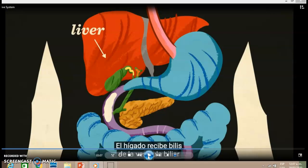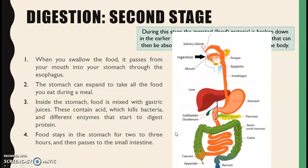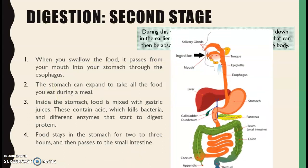Here we have the meaning of chyme in English: it is the semi-liquid mixture of partially digested foods and enzymes in the stomach — that mixture between the food that is partially digested and the gastric juices in our stomach. Chyle is just a different kind of liquid that forms after chyme is further processed in the small intestine.